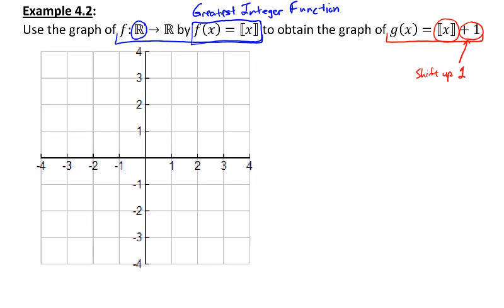Take your greatest integer function picture and shift the whole thing up by one. I'm going to start at the origin. My origin is now going to move up to one. It's going to be at (0, 1).